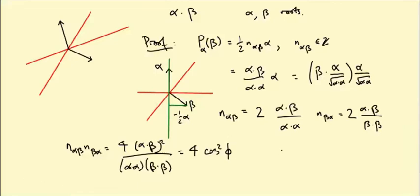That's because of this usual formula: α·β equals the length of α times the length of β times cos of the angle between them. If you square this formula, you see what you get is (α·β)², and then divided by (α·α) and divided by (β·β), which will give you cos² of the angle.